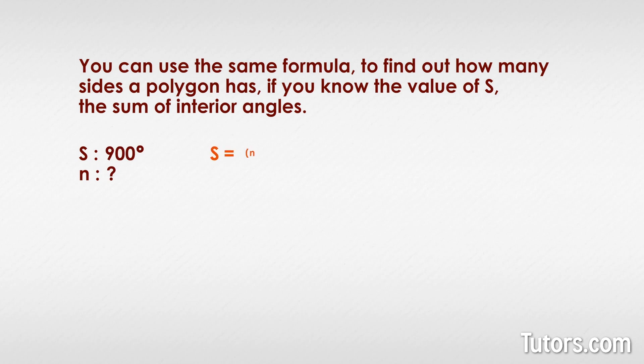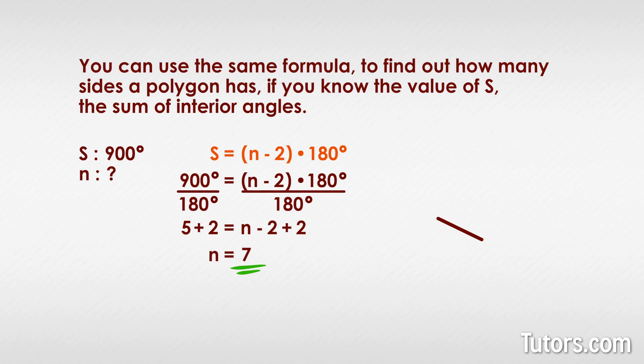Start with the formula. Use what you know, S equals 900 degrees. Divide both sides by 180 degrees. No need for parentheses now. Add 2 to both sides and we get N equals 7. The unknown shape was a heptagon.